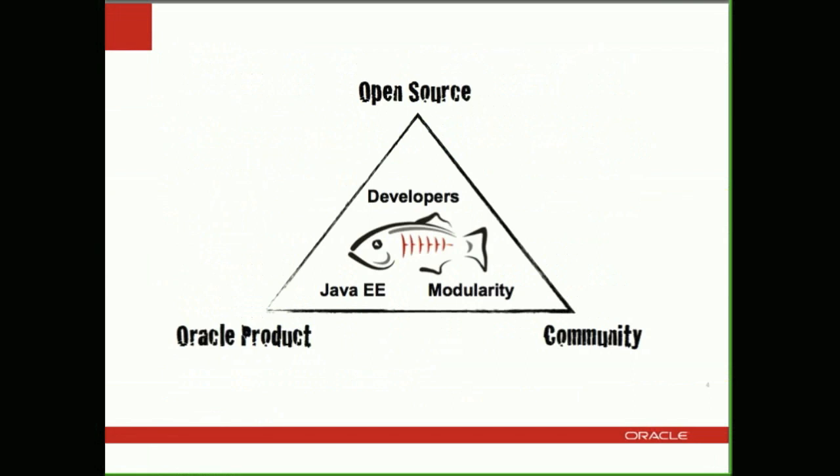As a reminder, GlassFish is an open source, production-quality application server. It is the reference implementation for Java EE 6, and has a good number of developer features which make development much more streamlined, in addition to all the simplification that went into Java EE 6. It's also an application server built to be modular from the ground up — we have a kernel called HK2 which is based on OSGi technology. Beyond the product, we also have a community of people using GlassFish and contributing to it, so there is a vibrant community contributing to GlassFish.